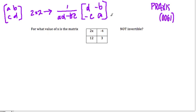And one thing to notice is when can't you have an inverse? Well, it's when, if AD minus BC is 0, what happens? 1 over 0 is undefined.